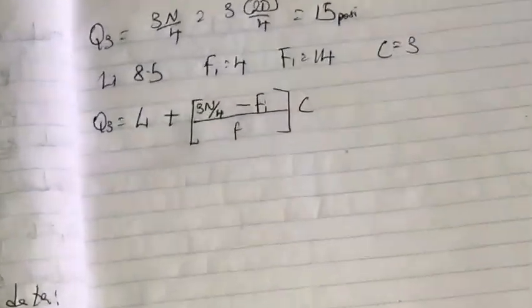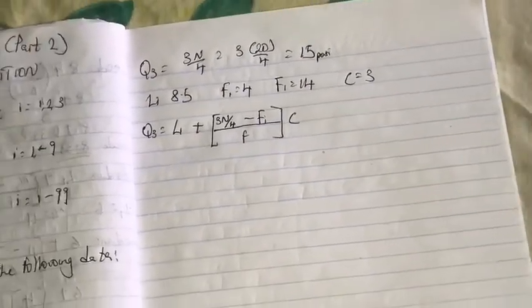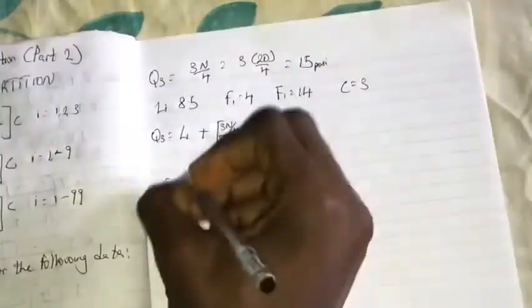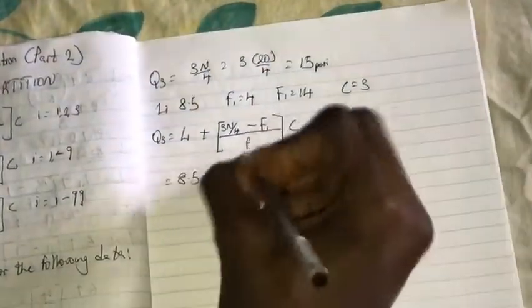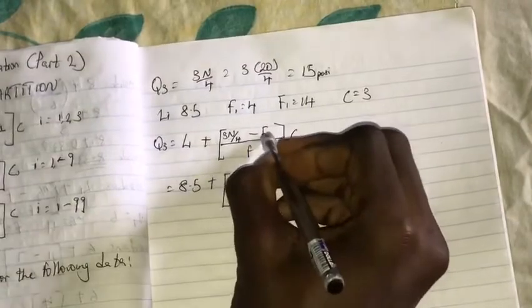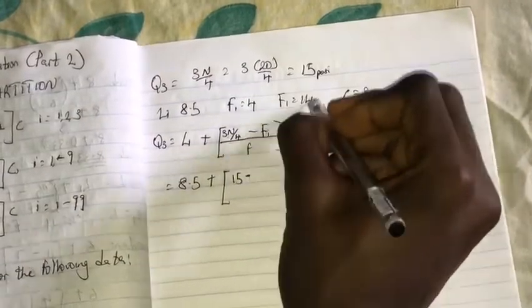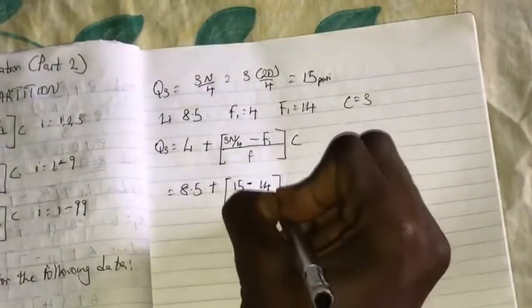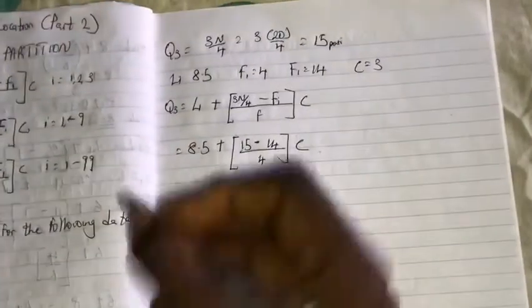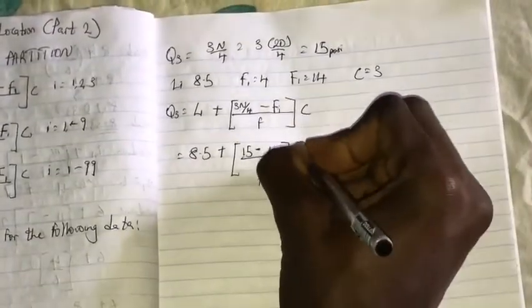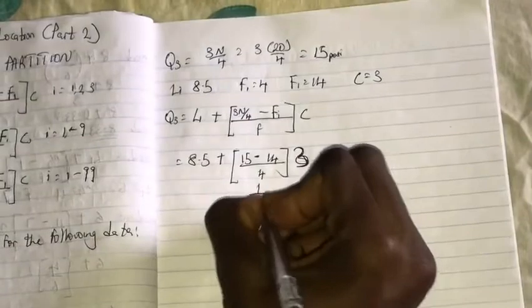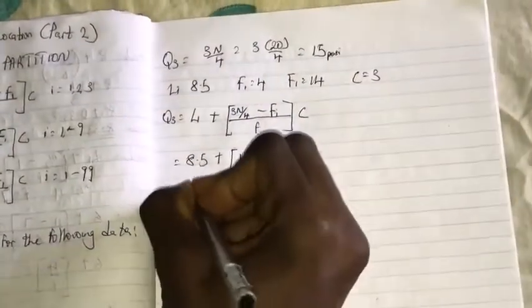Here is our formula for our upper quartile, which is Q3, as you can see. Therefore, our lower class boundary is 8.5 plus, this is 15, putting your 15, minus cumulative frequency before which is 14, over the frequency which is 4, and our class size 3. So this is 1 over 4 in brackets 3, plus 8.5.